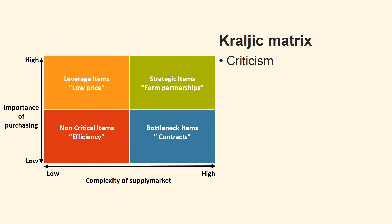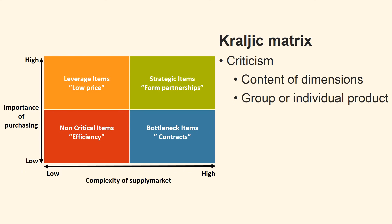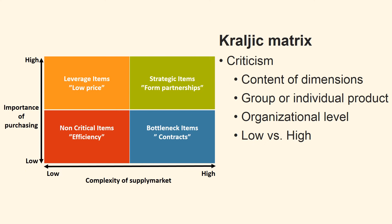Now let us consider a criticism of the model. It is not clear which elements to include in the complexity of the supplier market and the relative importance between them. The same applies to the importance of purchasing. It is not defined whether the model should be used at the product group level or down to the individual product. It is not clear whether the model should be used on department or company level — each company has to decide this for themselves. It is not clear how to differentiate precisely between low and high, and this applies to both dimensions. The grading of products in each category can change over time, so the model appears static, while the world is dynamic.